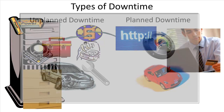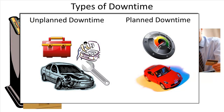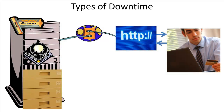Downtime can be further classified into planned and unplanned downtime. Think of your car: if it breaks down or gets in a wreck, that's unplanned downtime. But if your car is running low on fuel, you plan to go to the filling station — that's planned downtime. For servers, typical scheduled downtimes include applying service packs, cumulative updates, or operating system updates. Unplanned downtime is generally caused by human error, software bugs, power failure, or natural disasters.